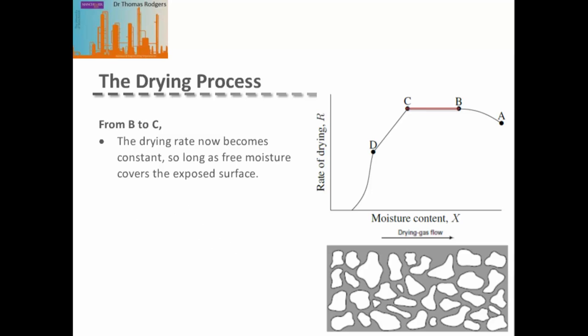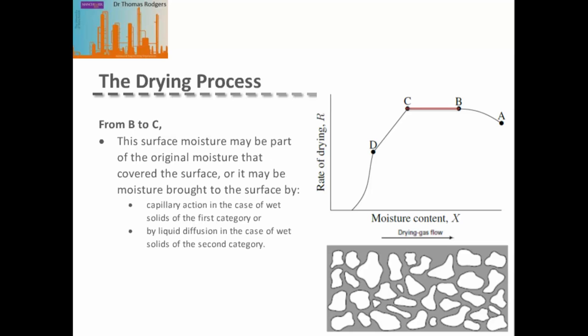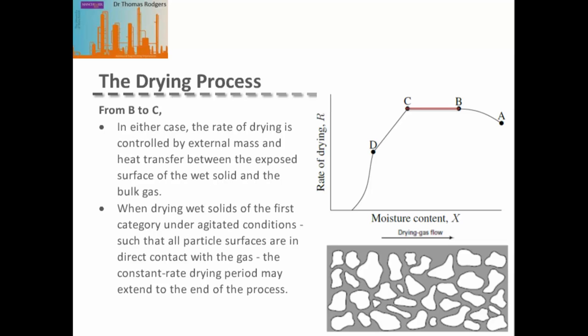The region from B to C is the constant drying rate period. As long as free moisture covers the exposed surface of the solid, the drying rate stays constant. This surface moisture may be original surface moisture or moisture brought up by capillary action through large pores (for granular solids) or by liquid diffusion through the gel-like solid material (for the second class). In either case, the drying rate is controlled by external mass and heat transfer between the wet surface and the bulk gas, not by transport through the solid.